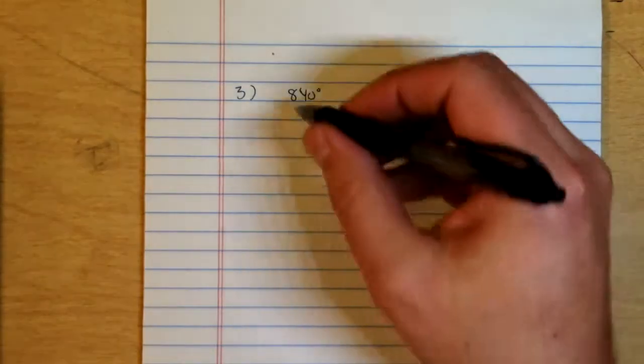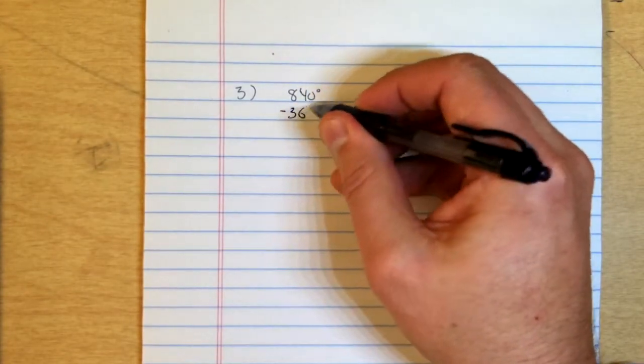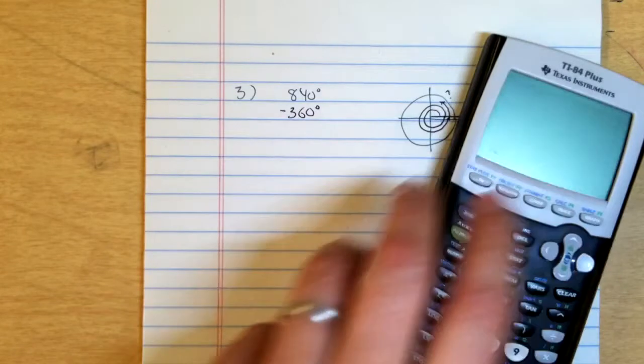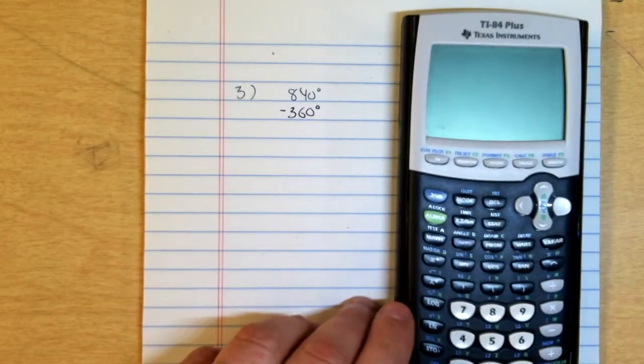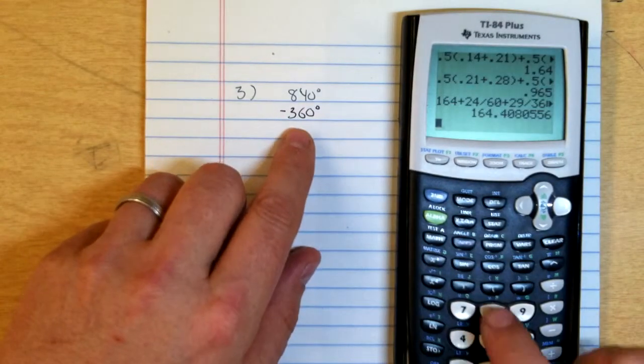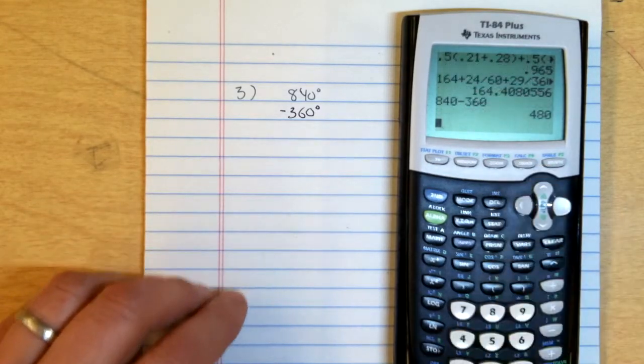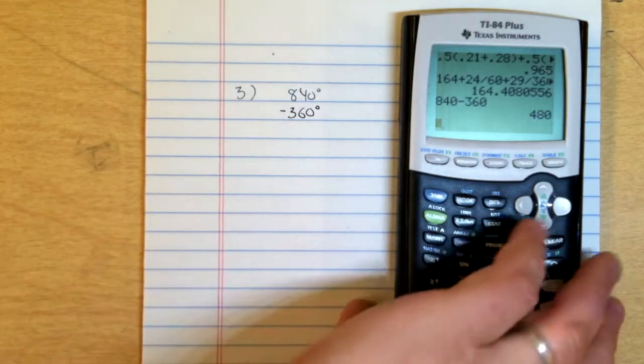So we just take our 840 degrees and we go minus 360 degrees. We might work that by hand, but maybe we'll be lazy and get our calculator. We do 840 minus 360 and we get 480. So that's 480.